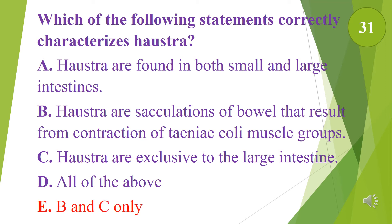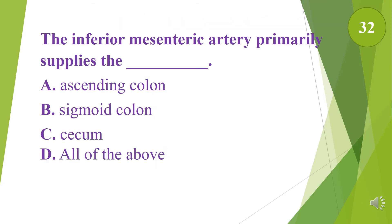The inferior mesenteric artery primarily supplies the what? A. Ascending colon. B. Sigmoid colon. C. Cecum. D. All of the above. The answer is B, sigmoid colon.